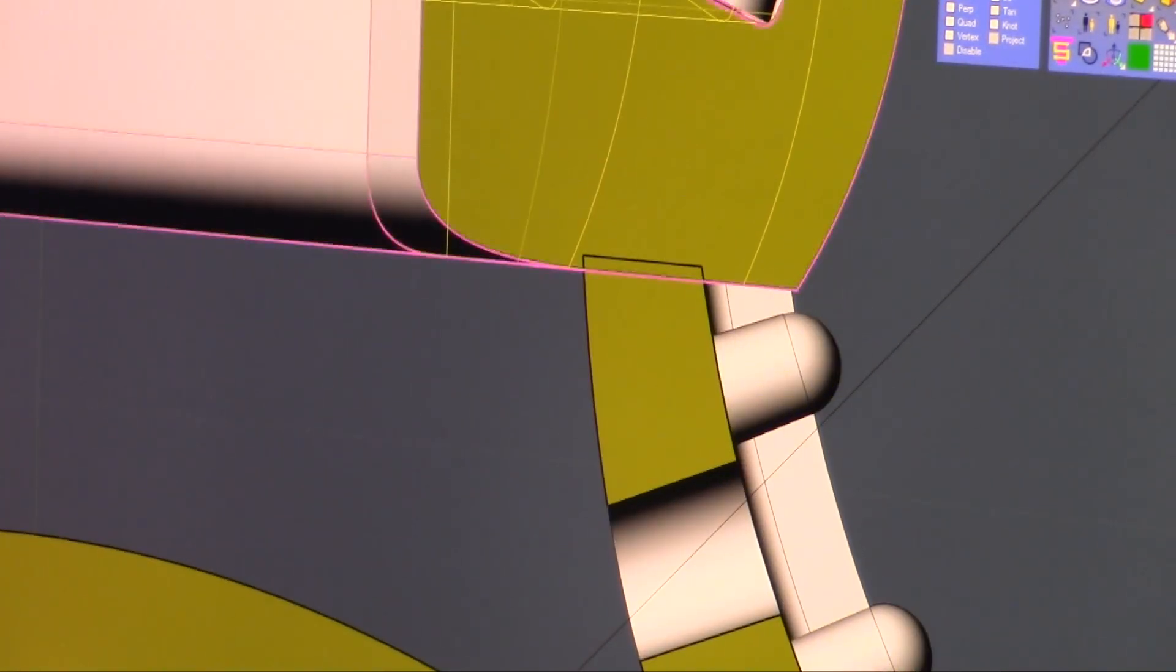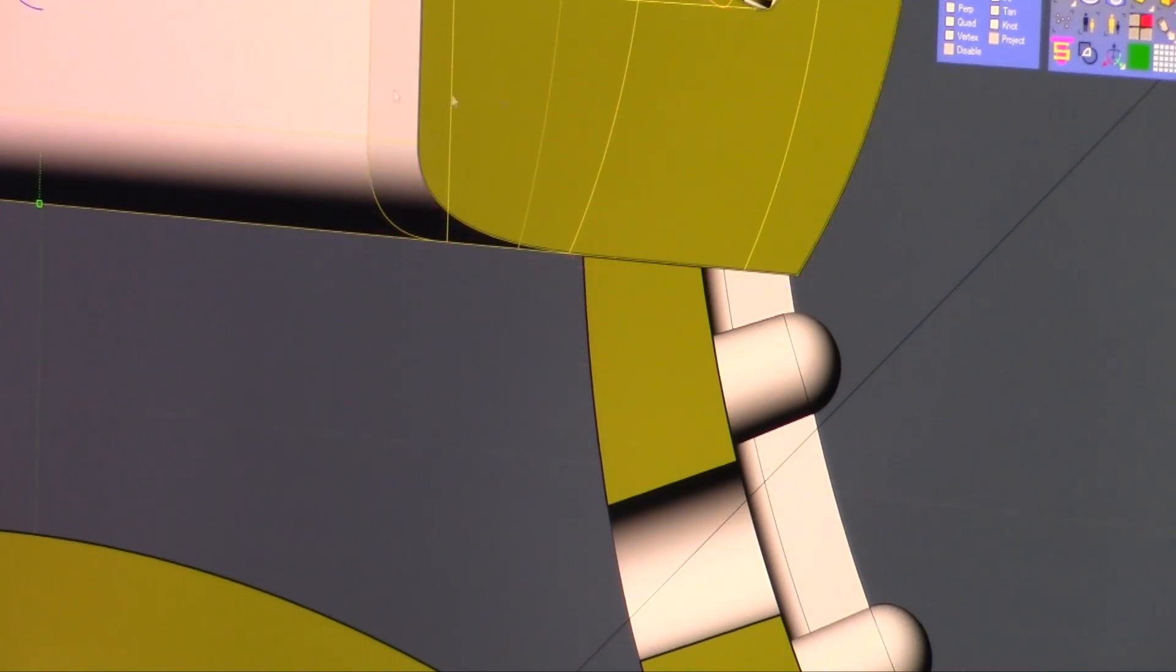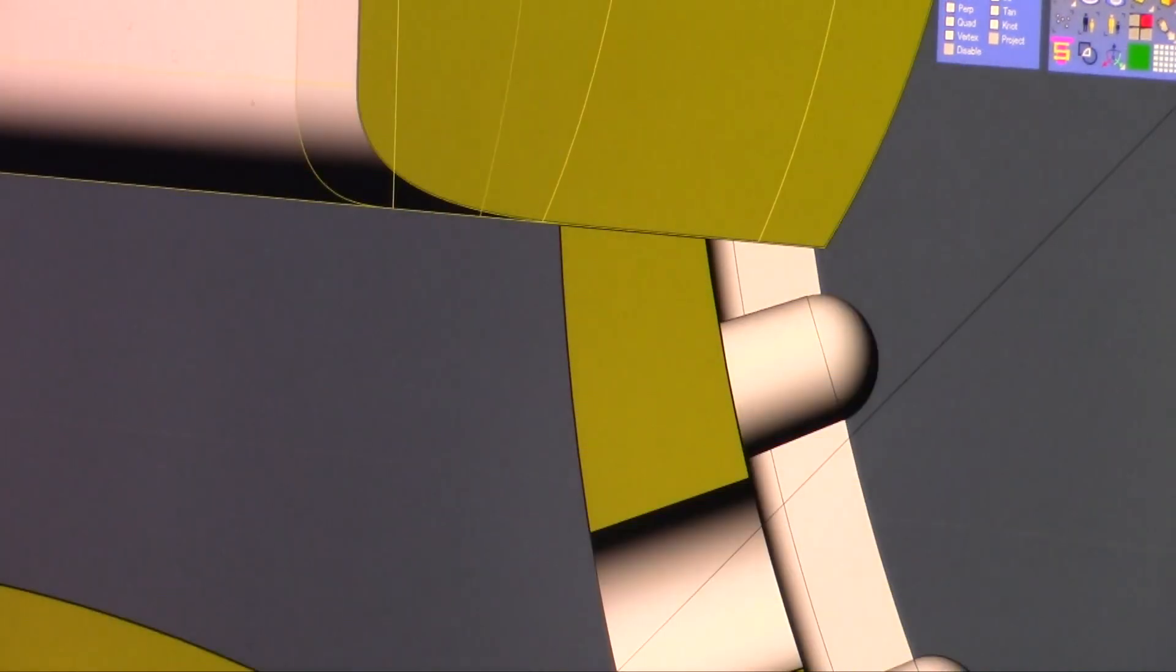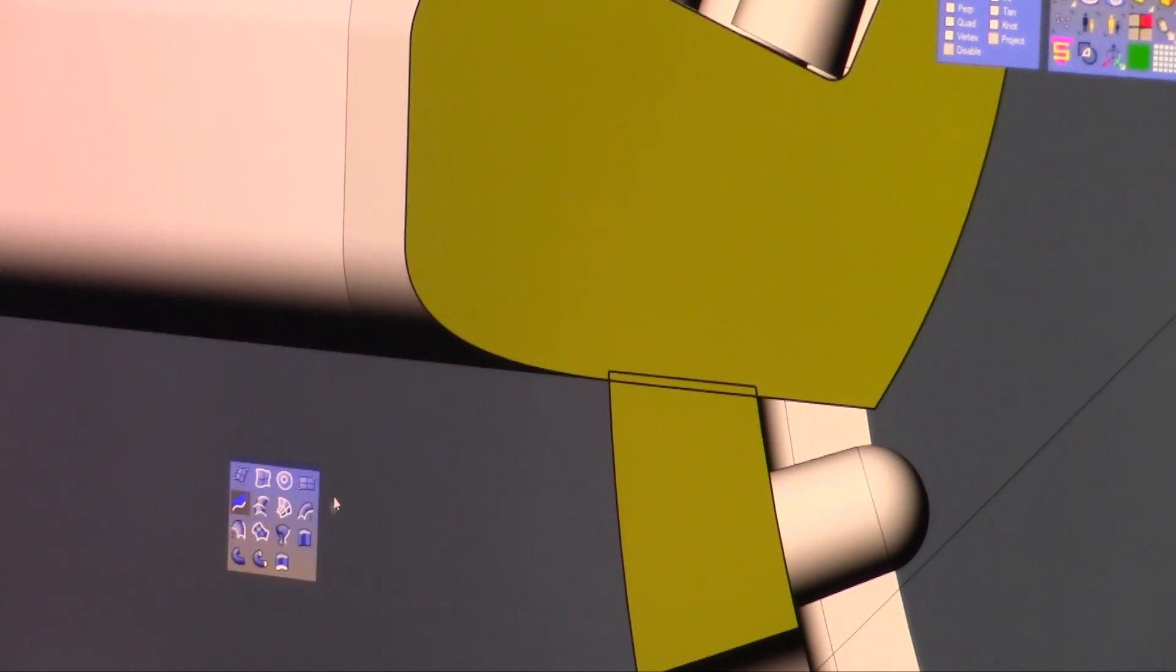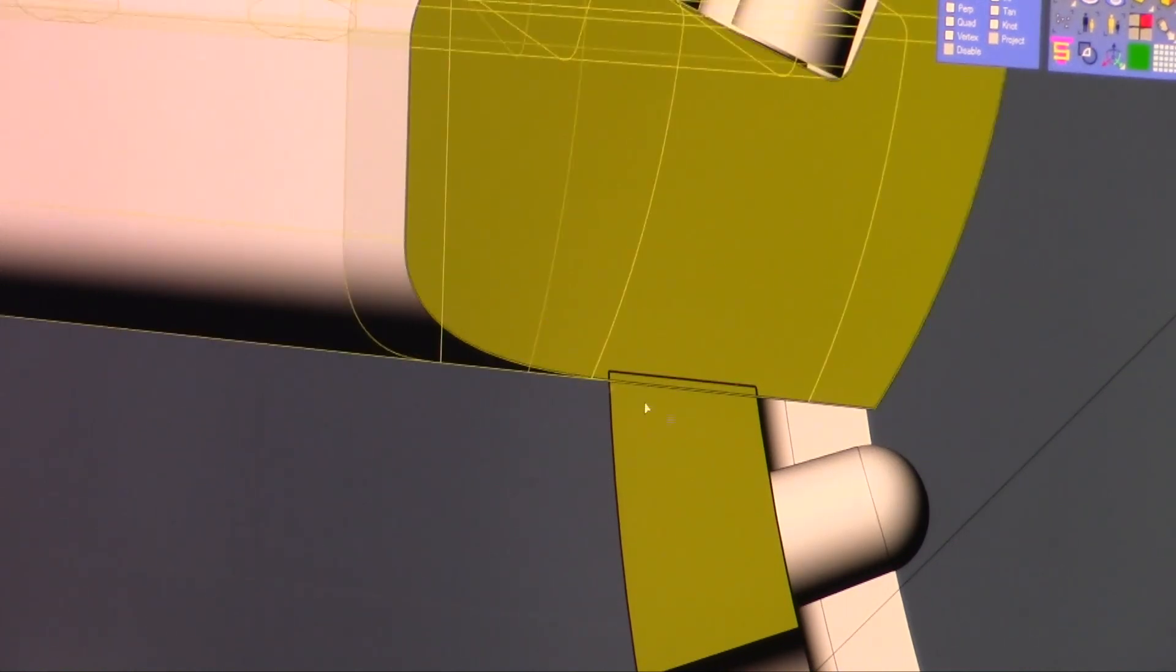So in this situation where I have my shank here, instead of putting the top just at the edge where it just lands on it, just pull it down a little bit and then do your boolean process. That will create a watertight solid ready to be exported as an STL.